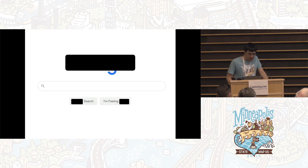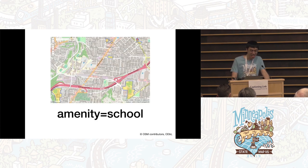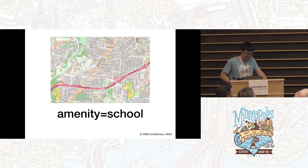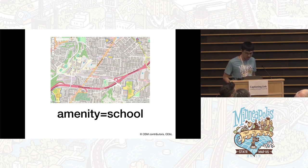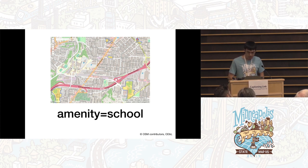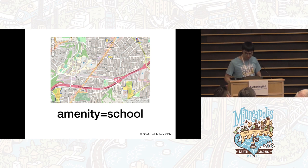Think of the wizard syntax as similar to a search engine whose map service shall not be named. At its core is the key equals value syntax that mappers often use in conversation or on the wiki. So this query finds schools that are tagged amenity equals school.